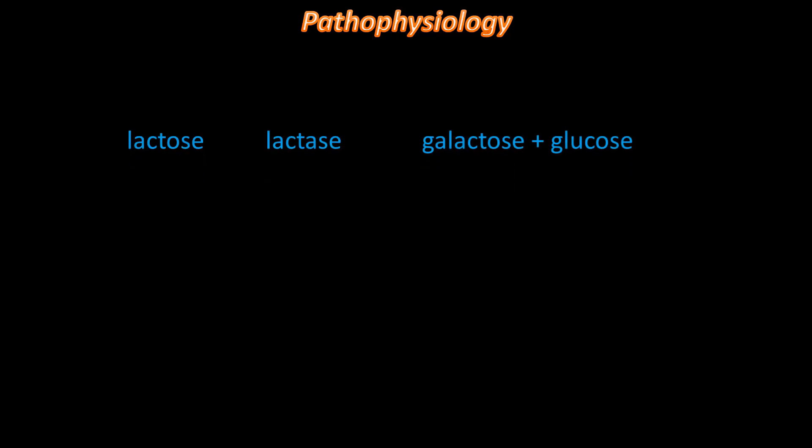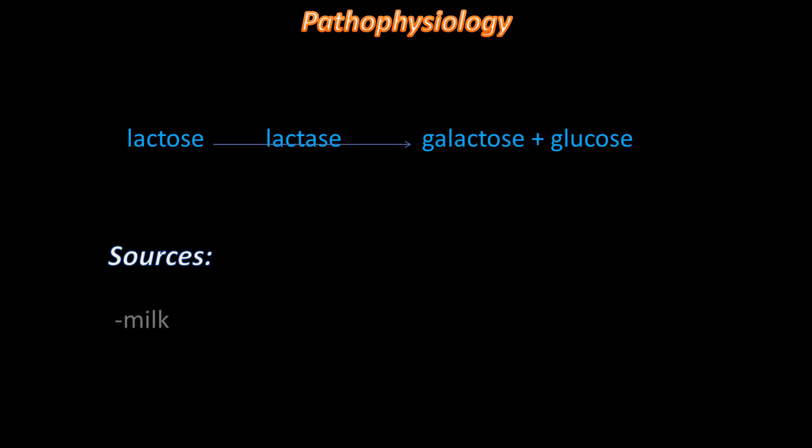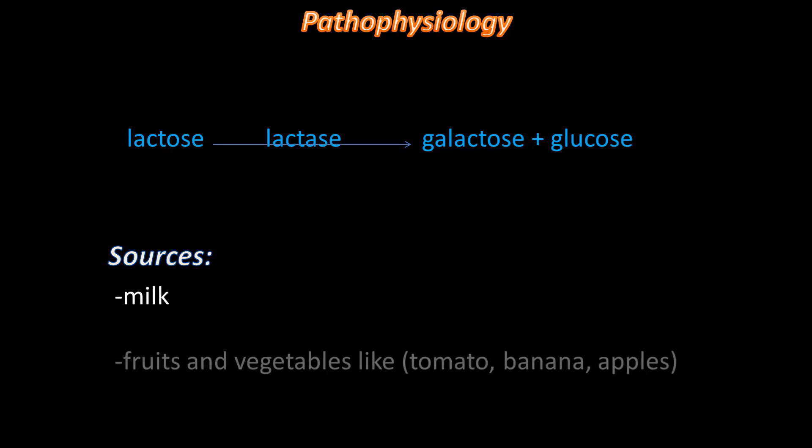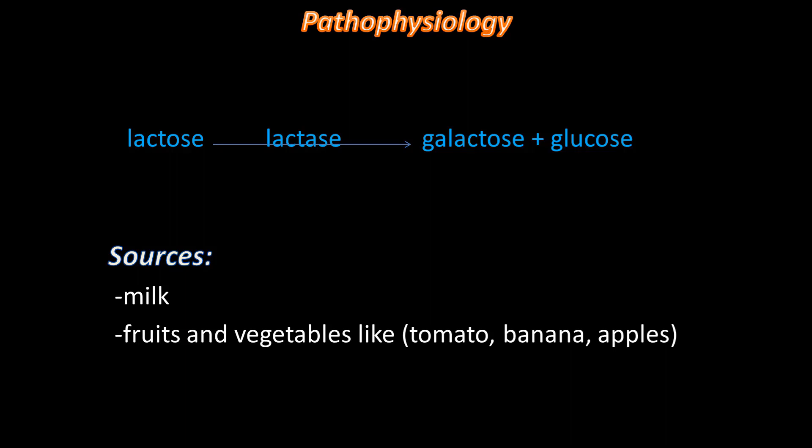What is the pathophysiology? Lactose, which is a disaccharide, is hydrolyzed by the enzyme lactase to release galactose and glucose — both monosaccharides. The main sources of lactose are milk, and also some fruits and vegetables such as tomato, banana, and even apples.